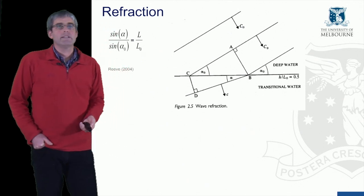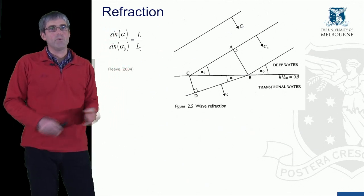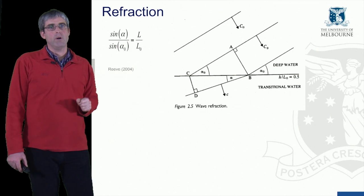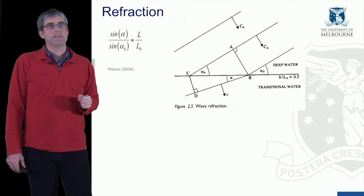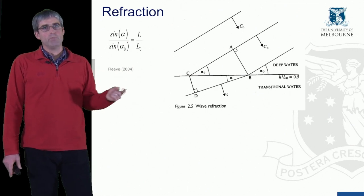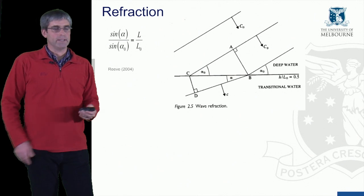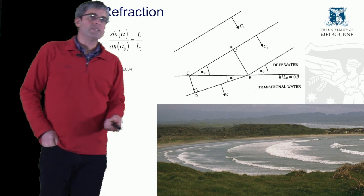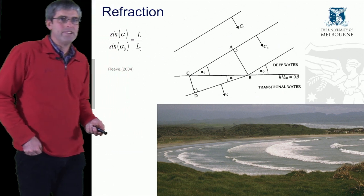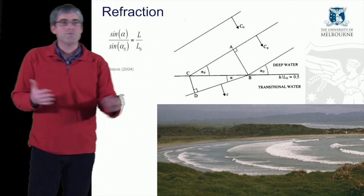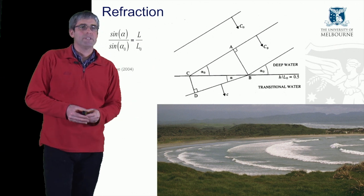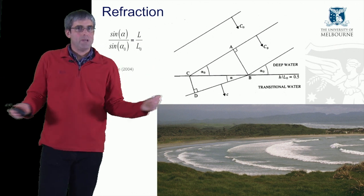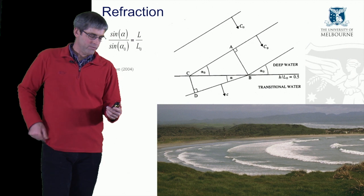We can calculate the change in the angle of the wave using the ratio of wavelength to the deep water wavelength. And here we see a good example of refraction into a curved cove where the waves have refracted so they almost match the shape of the shoreline.